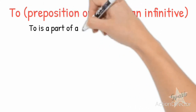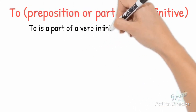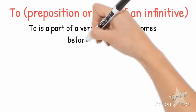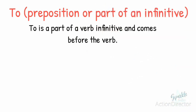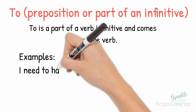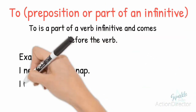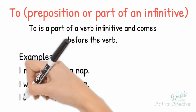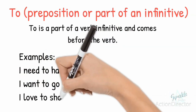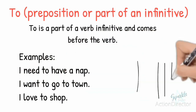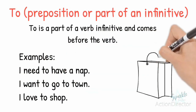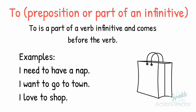To is also part of a verb infinitive and comes before the verb. For example: I need to have a nap. I want to go to town. I love to shop. To have, to go, and to shop are all verb infinitives.